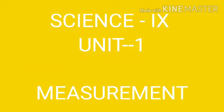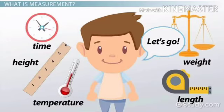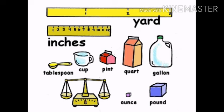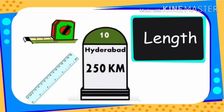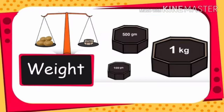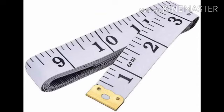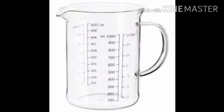In this lesson, Unit 1: Measurement. Measurement plays a very important role in our daily life. If you buy milk, it is measured in liters. If you travel some distance, it is measured in meters. If you buy vegetables, we buy in the form of kilograms — 1 kg potato, 2 kg potato. Likewise, measurement plays a very important role in our daily life.